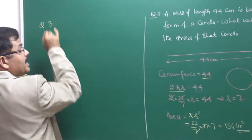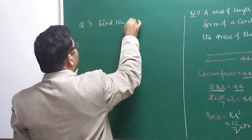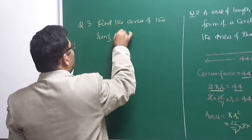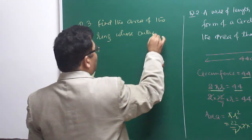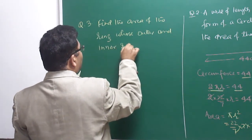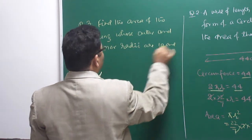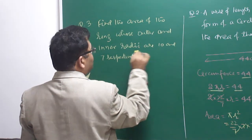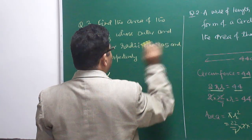Third question: find the area of a ring whose outer and inner radii are 10.5 cm and 7 cm respectively.